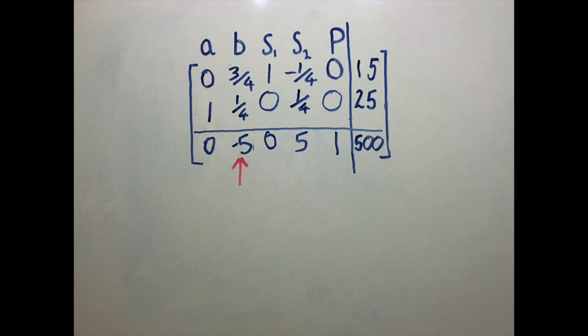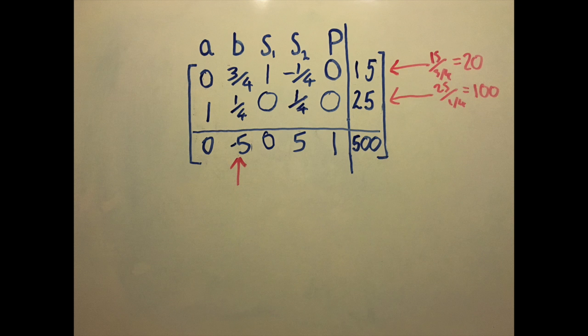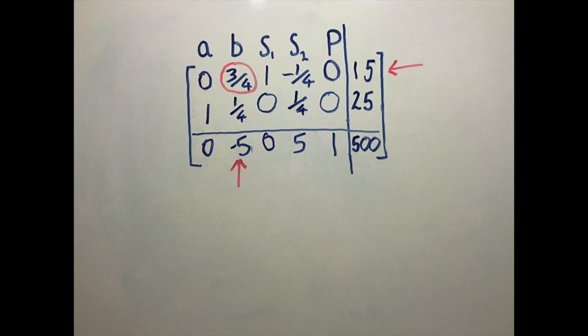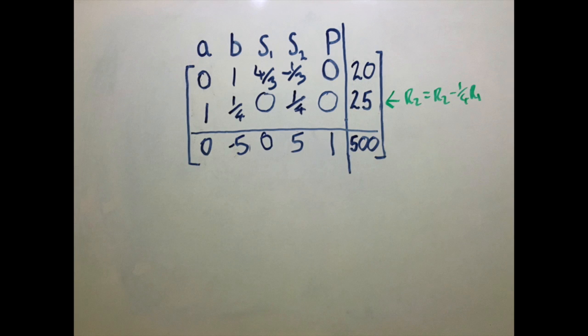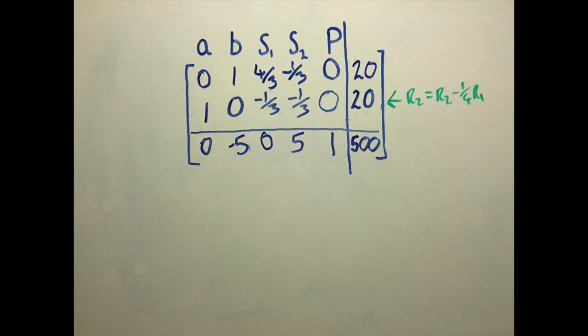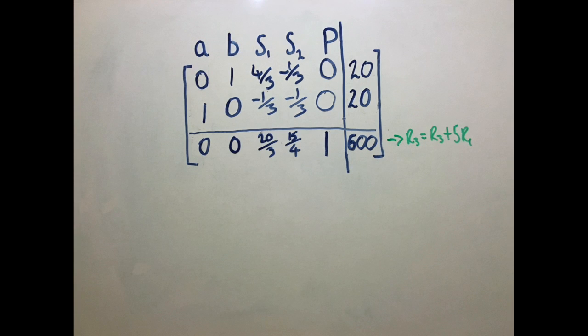Take the most negative entry from the last row. Find the smallest non-negative ratio. Select your pivot element. Divide the entire pivot's row by the pivot. Add or subtract multiples of the pivot's row to the other rows to get all of the other elements in the pivot column equal to 0.